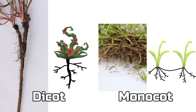Number five: dicots generally only grow roots in one place at the very bottom of the seed or seedling, called the radicle. The roots in a monocot, however, are adventitious. This means that roots can grow out of different nodes on the stem, and this diagram will hopefully give you a good idea of what this means.